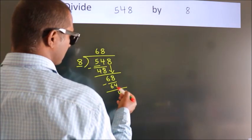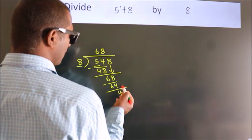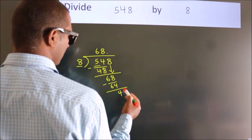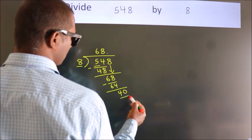After this, no more numbers to bring it down. So what we do is, we put dot, take 0. So, 40.